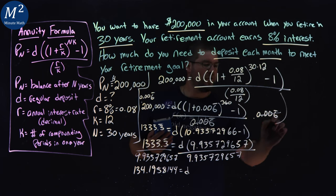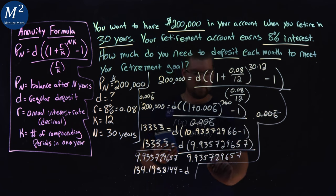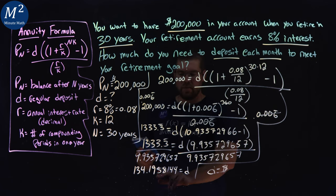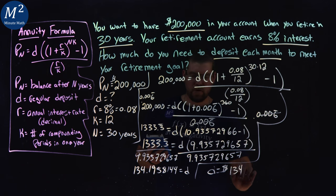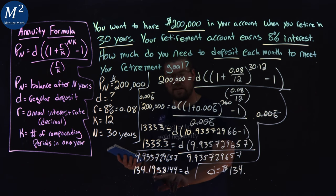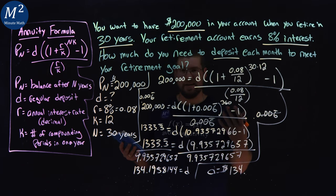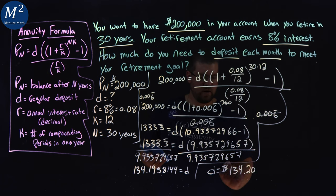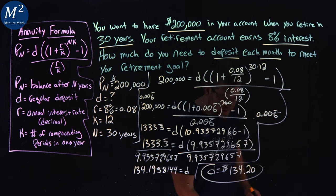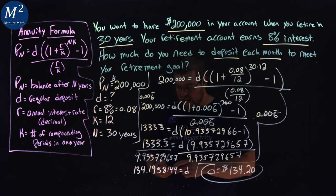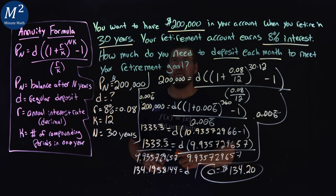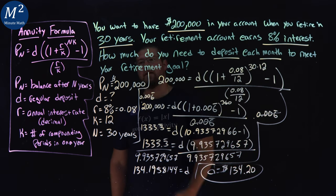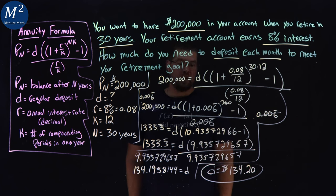If I'm going to rewrite this here, D first. D equals rounded, two decimal places, $134.20. We have $134.20 is the amount we have to deposit every month to hit our retirement goal of $200,000 in our account in 30 years.